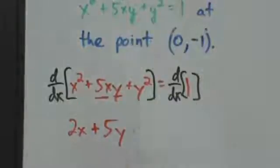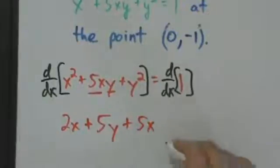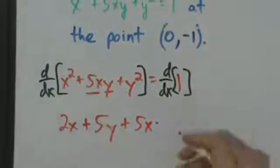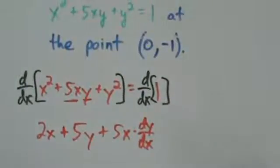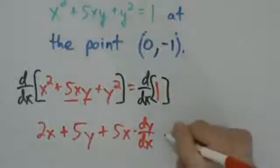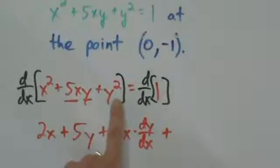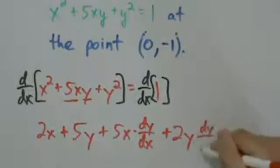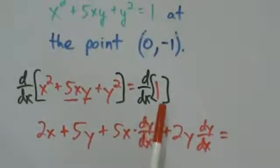By the product rule: derivative of the first times the second, plus the first times the derivative of the second. The second is y, so the derivative of y is dy/dx — because we're doing implicit differentiation, which is just the chain rule. Then plus y squared: the derivative of that is going to be 2y times dy/dx. And d/dx of 1 is just 0 because 1 is a constant.